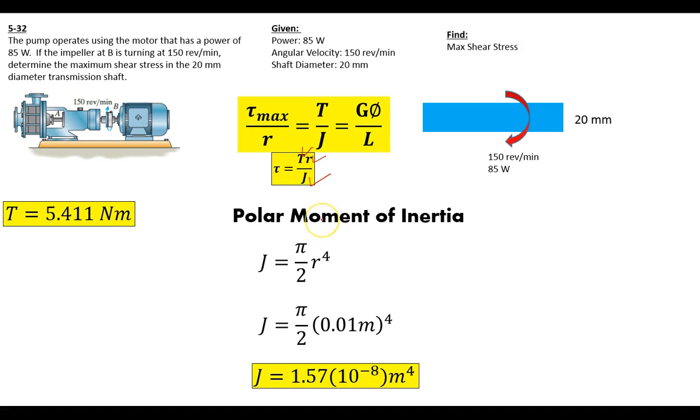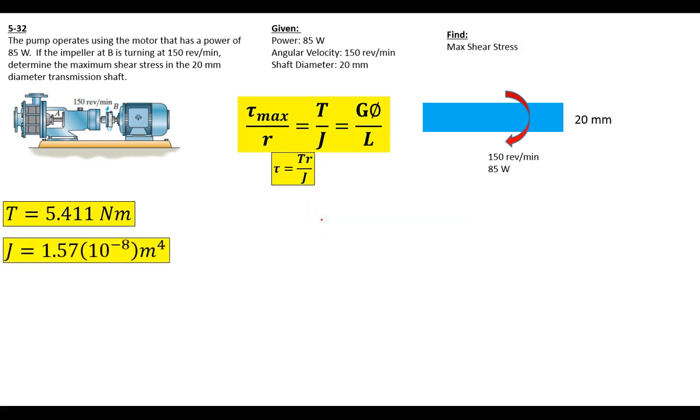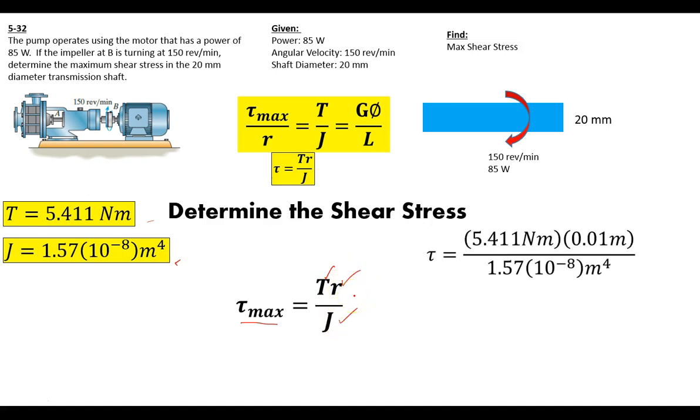The only thing left to do is figure out what the maximum shear stress is for this system. We've got these two on the side so we don't have to worry about our memory. Now we can determine our shear stress using this equation, which will get us the maximum shear stress. We've got our torque, our radius, and we've calculated our polar moment of inertia. So we've got 5.411 newton meters, 0.01 meters, over 1.57 × 10⁻⁸ meters to the fourth. Since shear stress is newtons per meter squared, newtons is fine, meters squared gets rid of this and throws that into meters squared. So now we have newtons per meter squared, which is a Pascal.